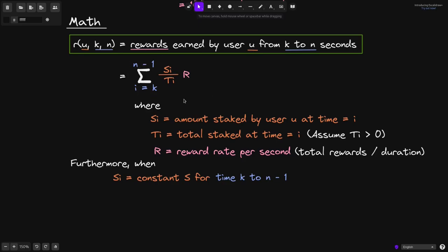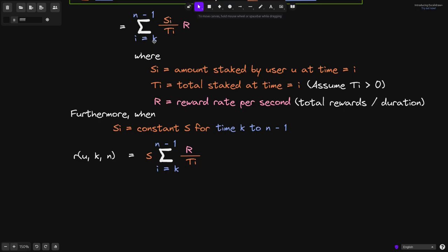Assuming that s sub i is a constant from i equals k to n minus 1, we can pull out this s sub i out of this summation, and we get this equation over here.